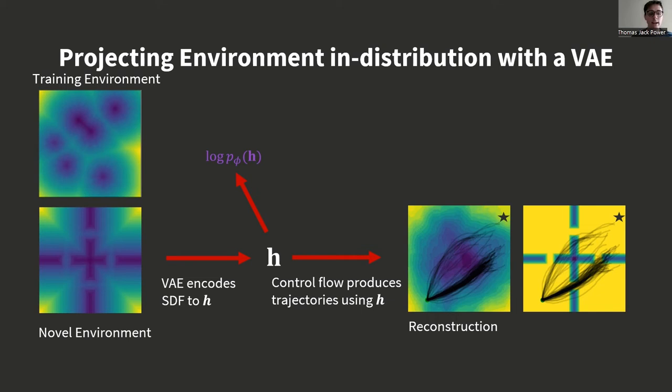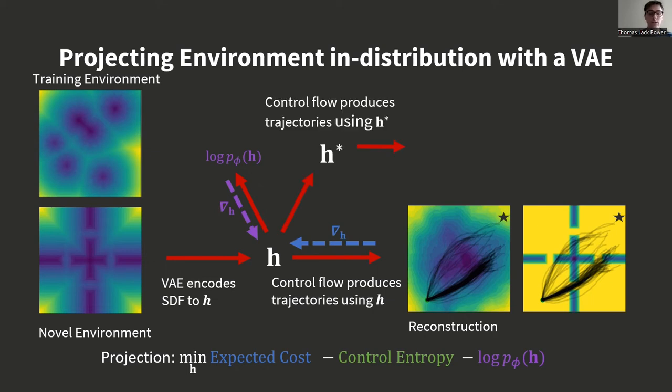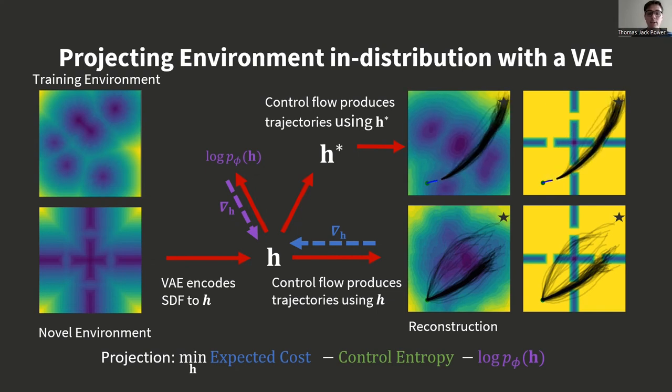To do the projection, we then aim to combine the OOD score with the cost on the resulting control distribution. This results in a new environment representation, which can be used for sampling new control sequences. Iteratively running this projection during execution effectively hallucinates an environment that is close to the training distribution, while also ensuring the resulting samples are low cost.